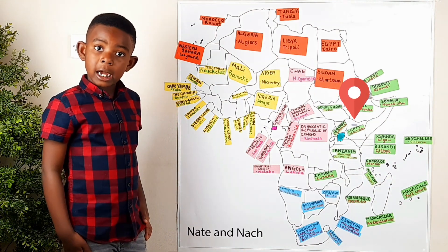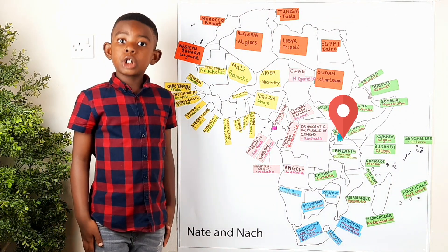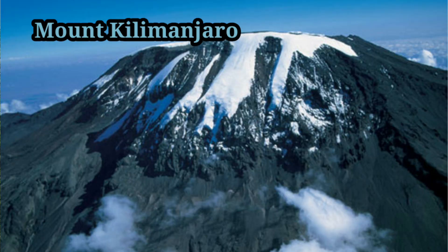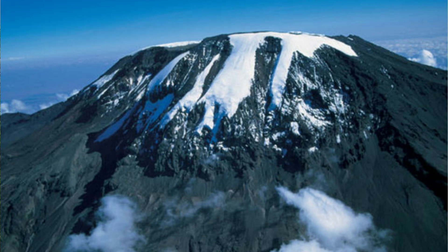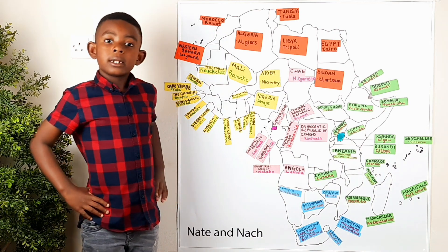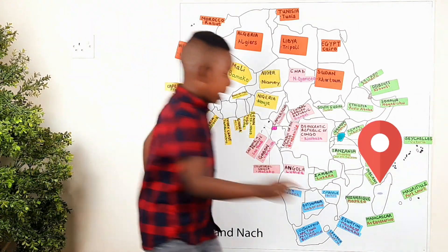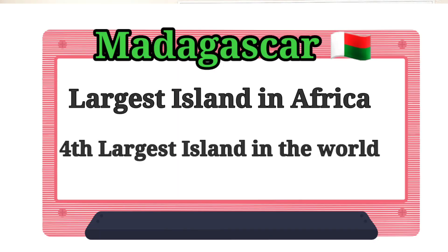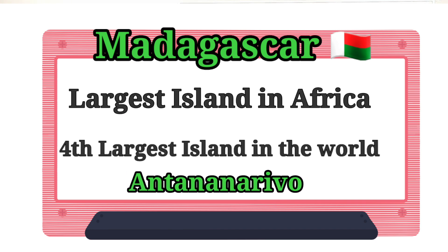In Tanzania, we have got the largest mountain in Africa. It is called Mount Kilimanjaro. The highest peak in Mount Kilimanjaro is called Uhuru Peak. Our next fun fact is about Madagascar. Madagascar is the largest island and it is a big island in the Indian Ocean. The capital is Antananarivo. We find lots of lemurs there.